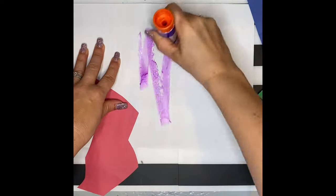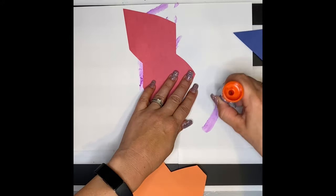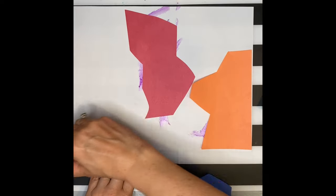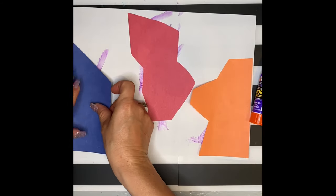Next, you're going to begin gluing your shapes down. Start with gluing one in the middle and then work around that middle shape. If your shape has a flat edge, you can line it up to the side of the paper.